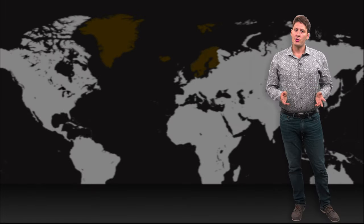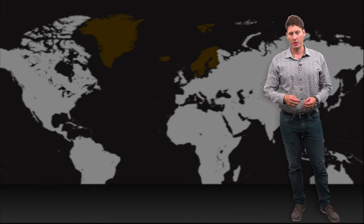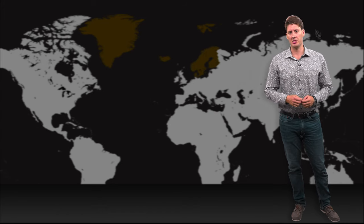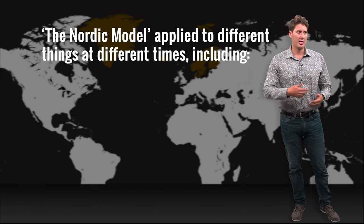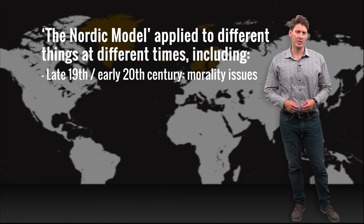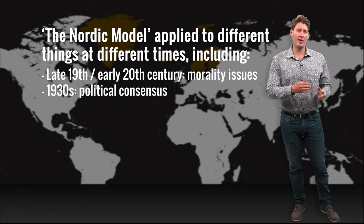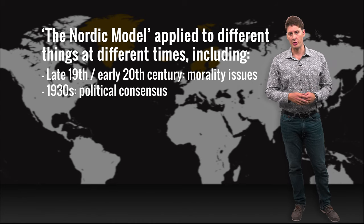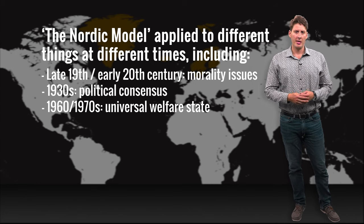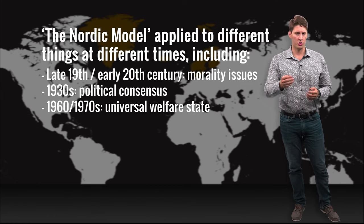Many accounts also apply the concept anachronistically to describe Nordic cooperation or Nordic parallels in the past, despite the term only really coming into popularity in the 1990s. We therefore hear about Nordic models of status measures to regulate morality issues like marriage in the late 19th and early 20th century, to describe periods of political consensus such as the red-green alliances of the 1930s, or to describe the enlarged universal welfare state, especially during the supposed halcyon years of the 1960s and 1970s under social democratic rule.